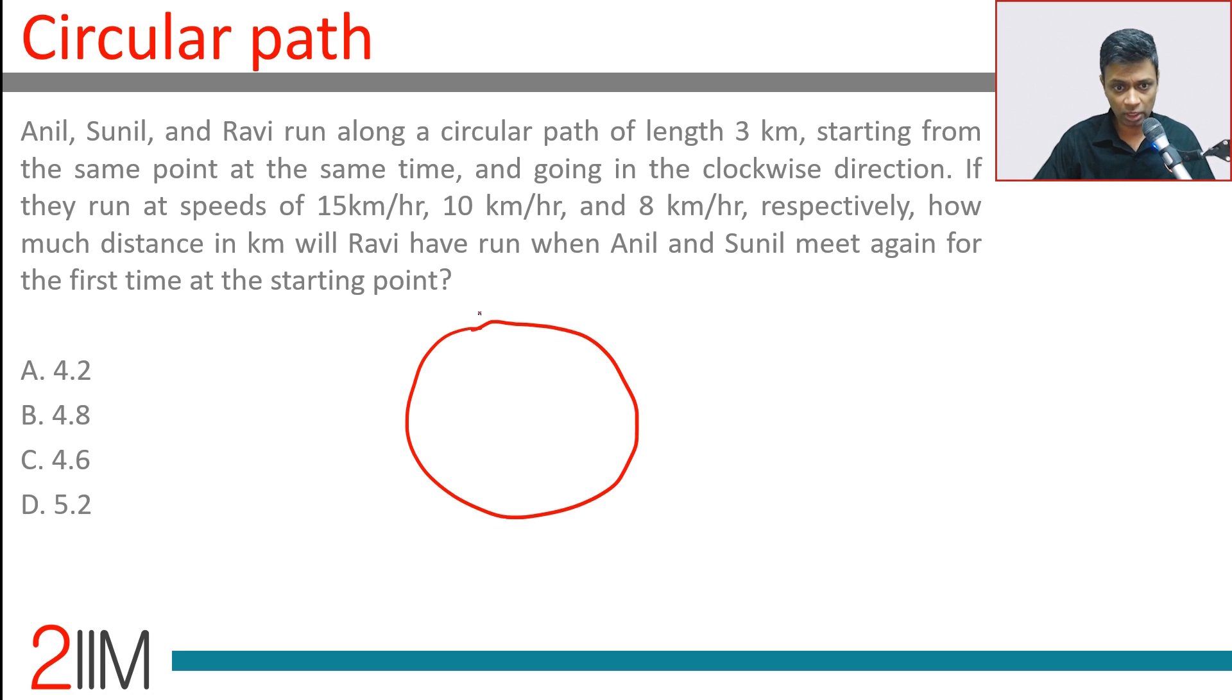So Anil, Sunil and Ravi clockwise, this is 3 kilometers. They run at speeds of 15 kilometers per hour, 10 kilometers per hour and 8 kilometers per hour. So they go at 15, 10, 8.